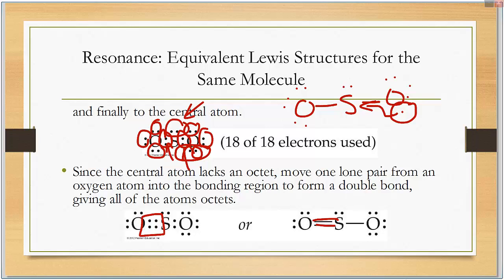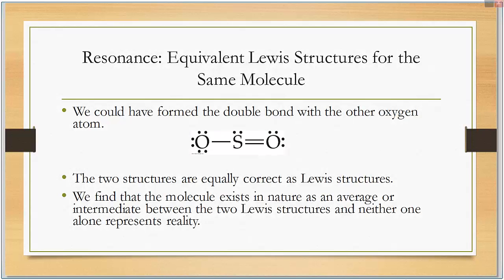Now you might ask yourself, which oxygen donates those two electrons? And that's where the term, the area of resonance comes in. It goes both ways. We could have formed the double bond with the oxygen from the other atom.